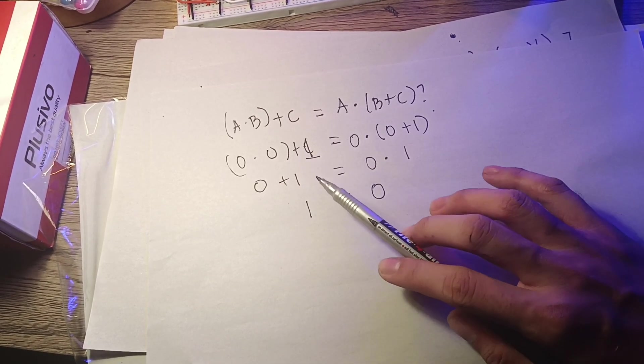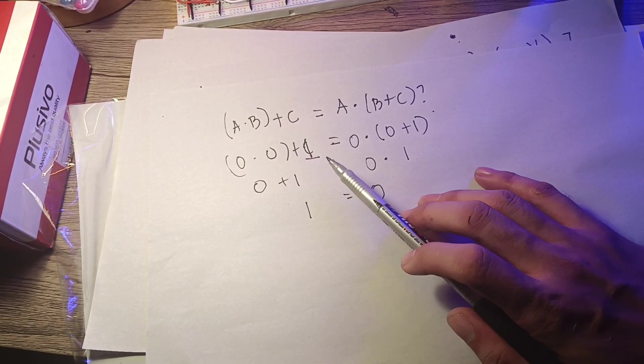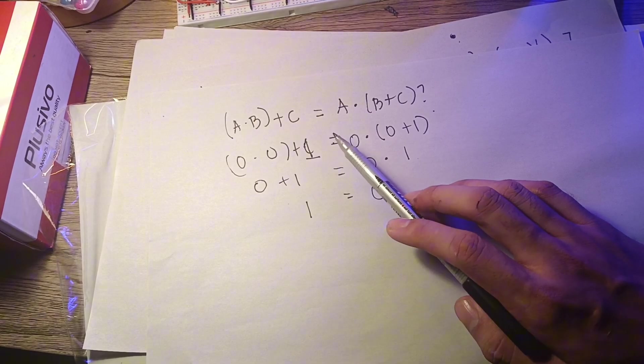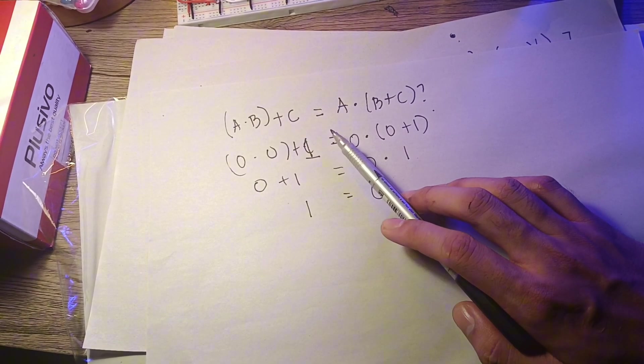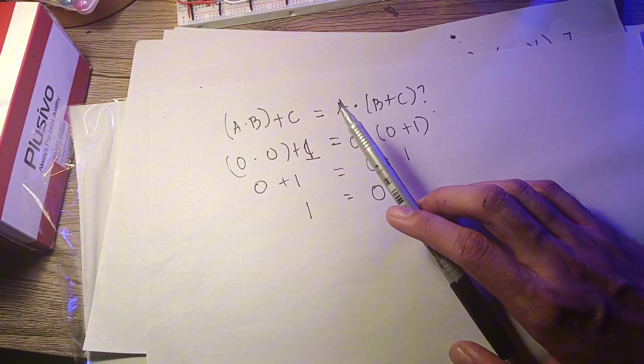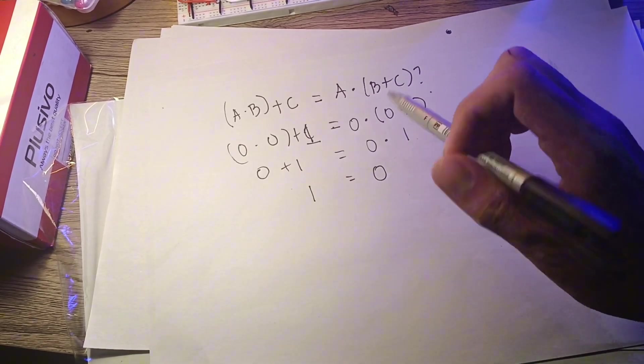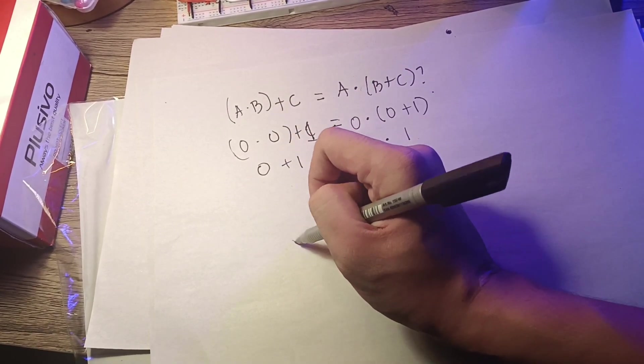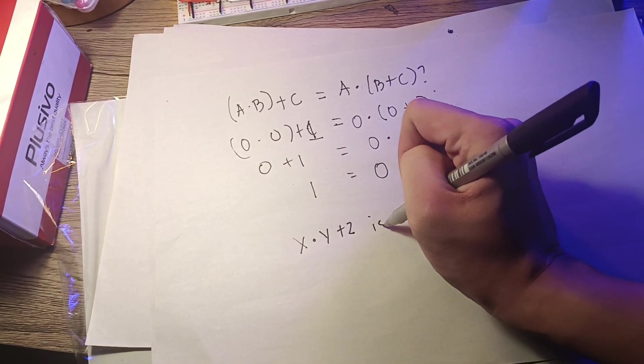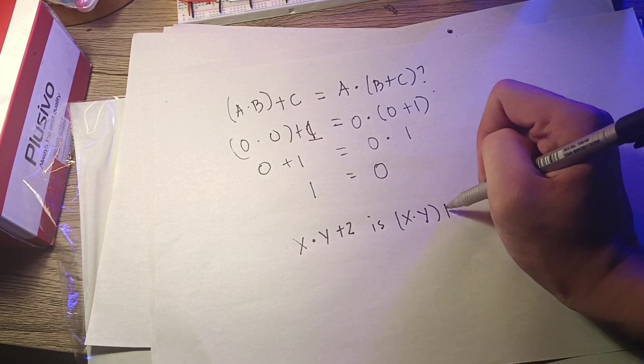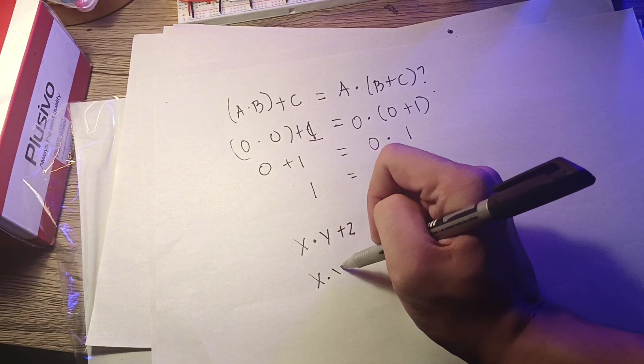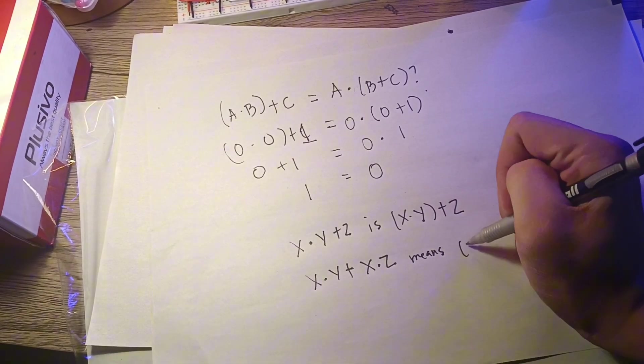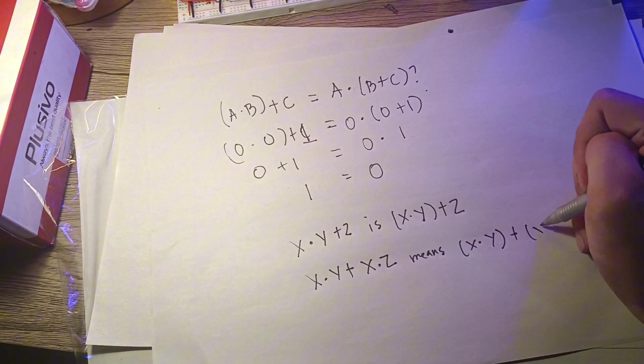Operating from left to right is used in some programming languages but not usually by algebraists or computer designers or maintenance personnel. The rule which is used is that the multiplication is always performed before the plus. Thus, X times Y plus Z is parenthesis X times Y plus Z. And X times Y plus X times Z means X times Y plus X times Z.